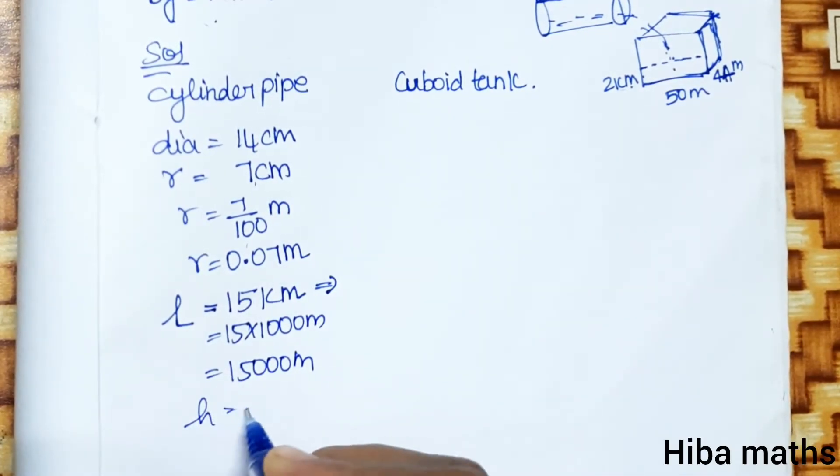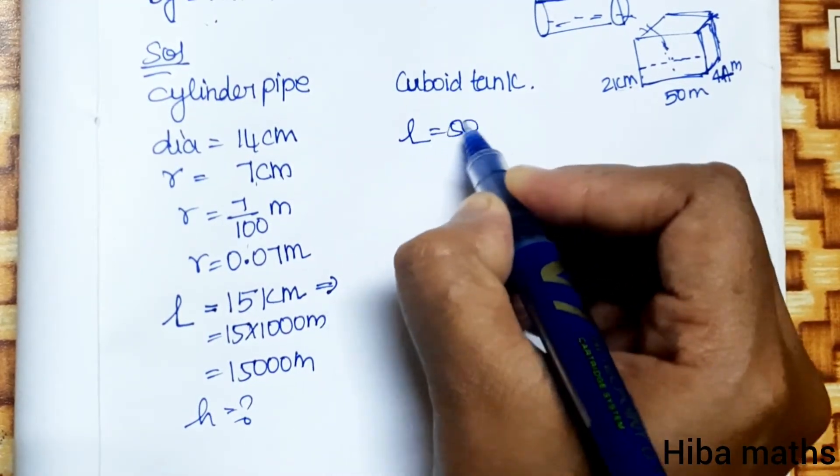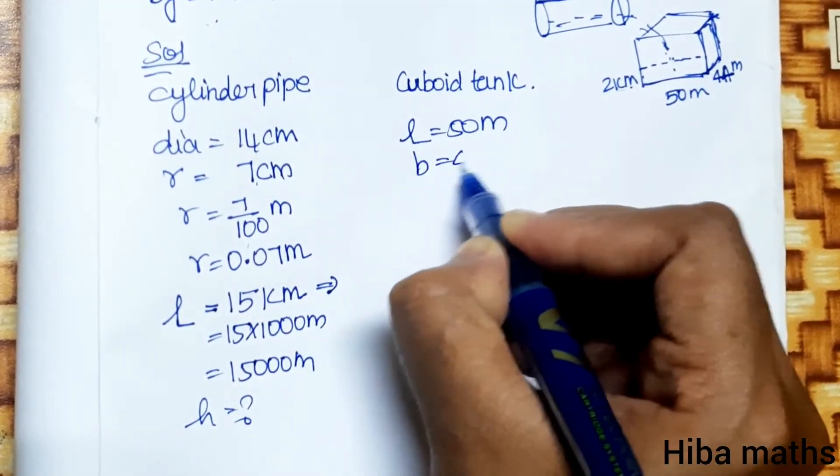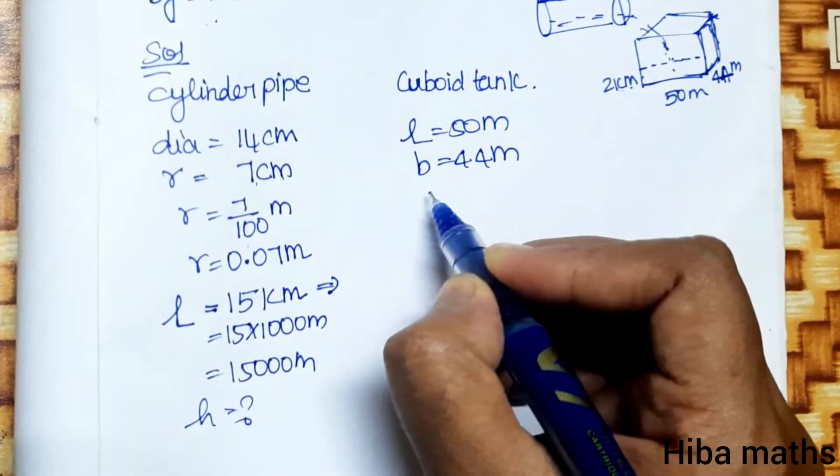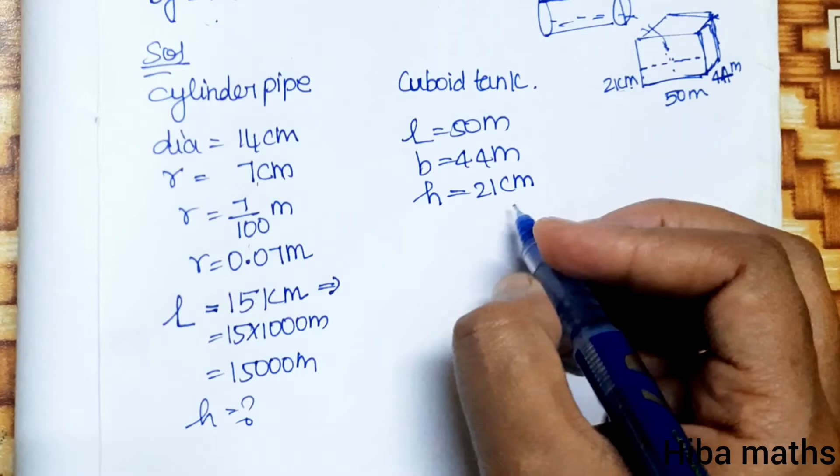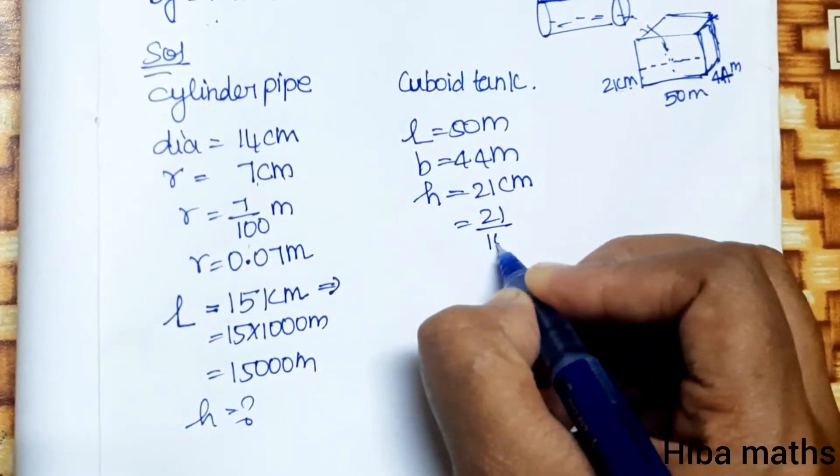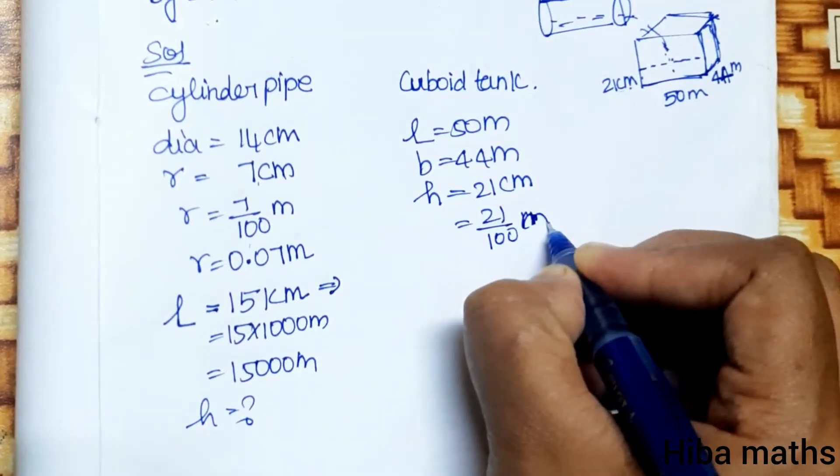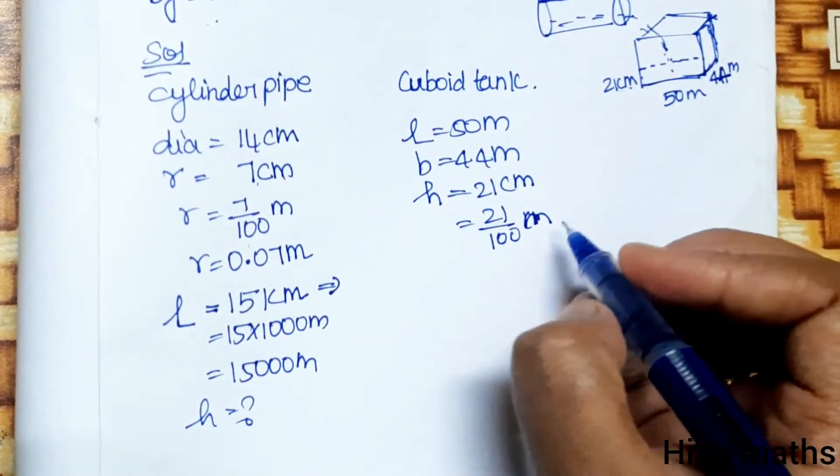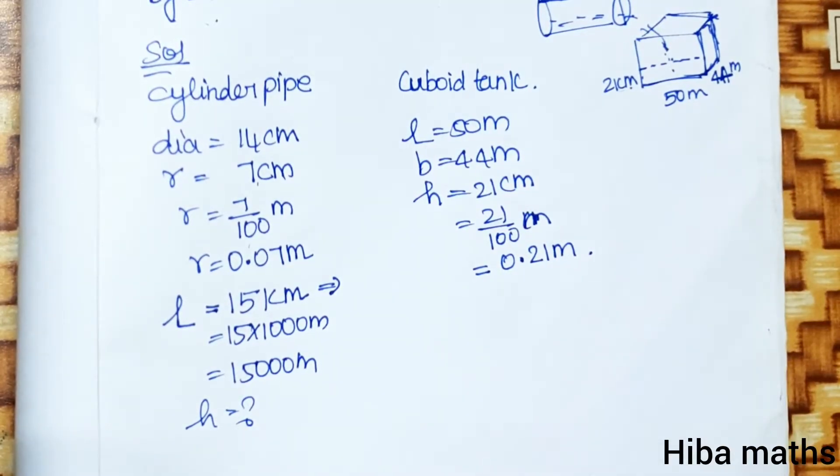Length is 50 meter, breadth is 44 meter. Height increase is 21 centimeter. We convert 21 centimeter: 21 by 100 meter, that is equal to 0.21 meter. All units must be the same.